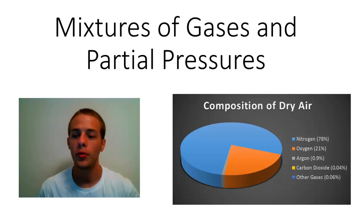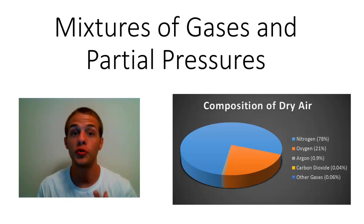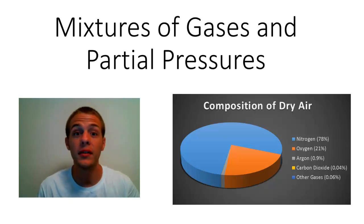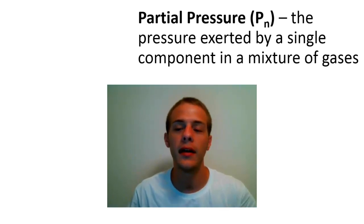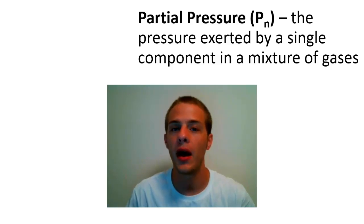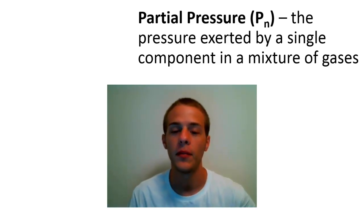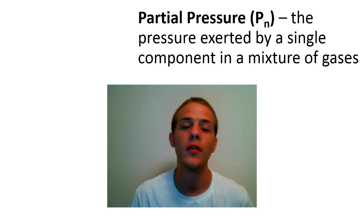We're going to talk about partial pressures, derive an expression for partial pressure, understand what it means, and do some calculations involving partial pressures. A partial pressure, symbolized as P sub n, is the pressure exerted by a single component in a mixture of gases.